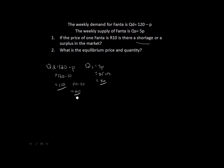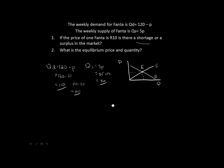That is as simple as that for the first question. The second question asks: what is the equilibrium price and quantity? We know from our early chapters in economics that equilibrium is obtained where supply equals demand — where the supply curve and demand curve cross is where our equilibrium is. We have an equilibrium quantity and an equilibrium price, but we now need to find them mathematically.